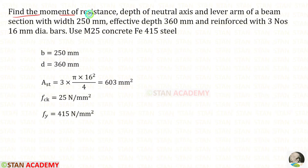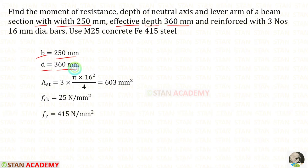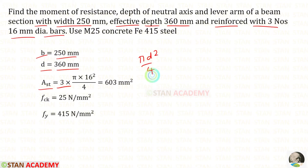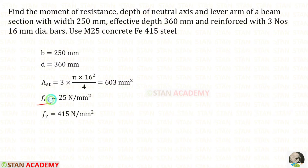Find the moment of resistance, depth of neutral axis, and lever arm of a beam section with width B = 250 mm, effective depth D = 360 mm, reinforced with three 16 mm diameter bars. The area of steel in tension AST = 3 × (π × 16² / 4) = 603 mm². FCK is given as 25 N/mm² and FY as 450 N/mm².